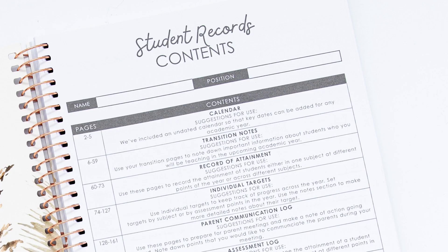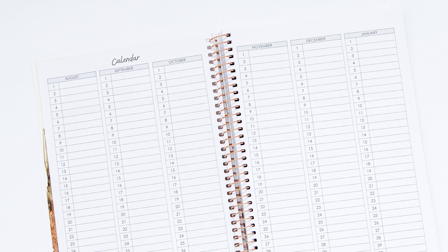The first page of the student record is a contents page. We've numbered every page in the student record so you can easily get to the page that you need. The first section of the student record is our calendar section. We've dated these in a flexible way so they can be used in any academic year.